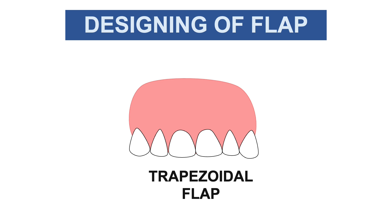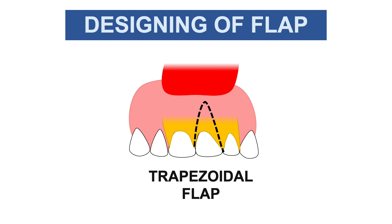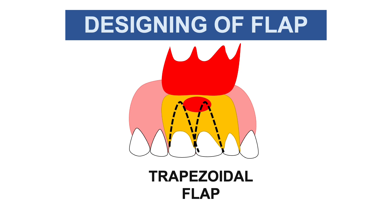Let's begin with the trapezoidal flap. Look at the figure — these are the teeth associated with periapical pathology. In the trapezoidal flap, we give one horizontal incision along the gingival crevice with two vertical relieving incisions, as you can see in the figure. After raising the flap, we have a periapical pathology involving the adjacent tooth — a large pathology involving more than a single tooth.